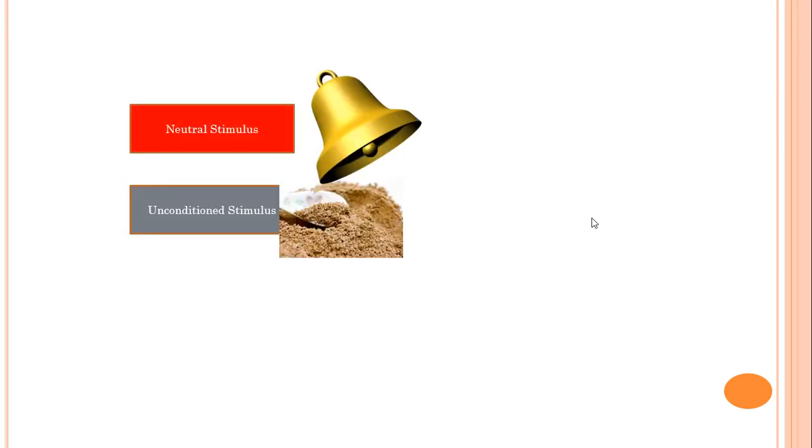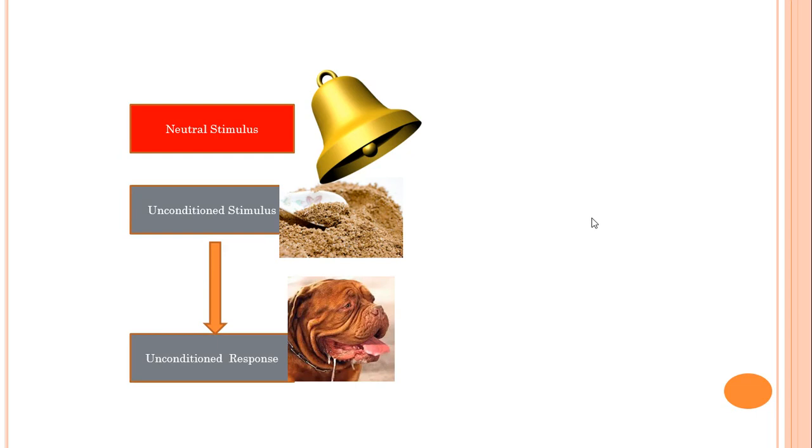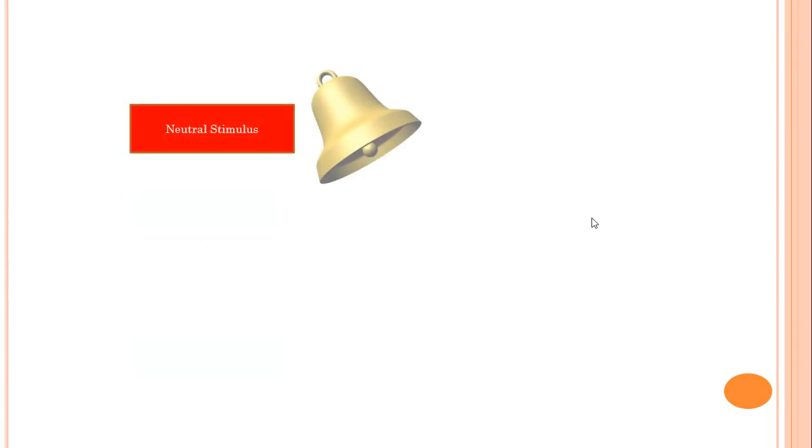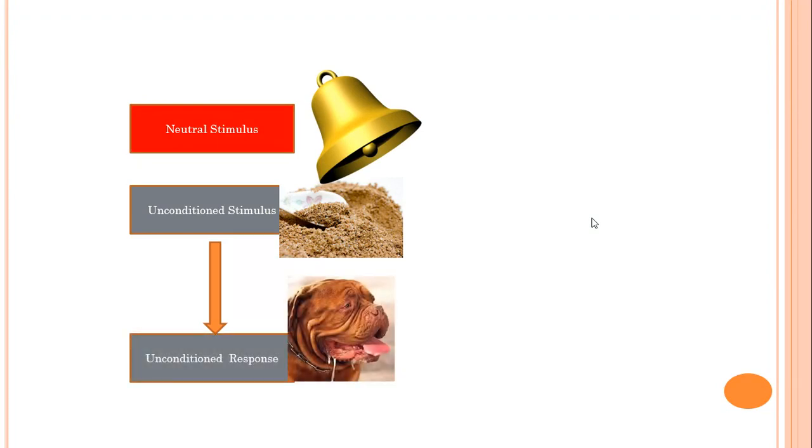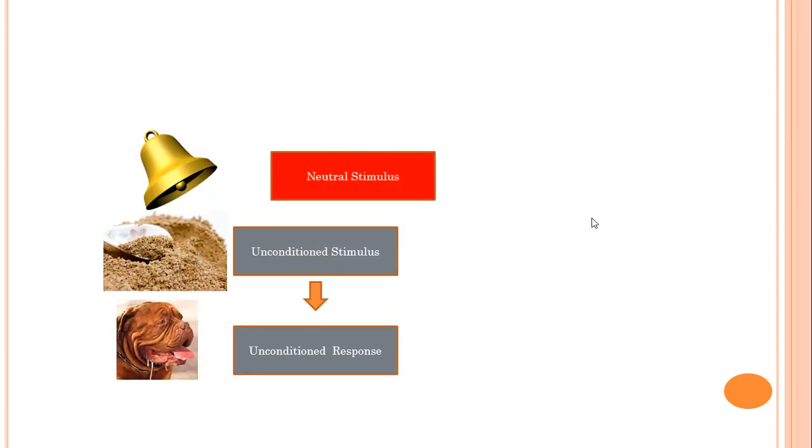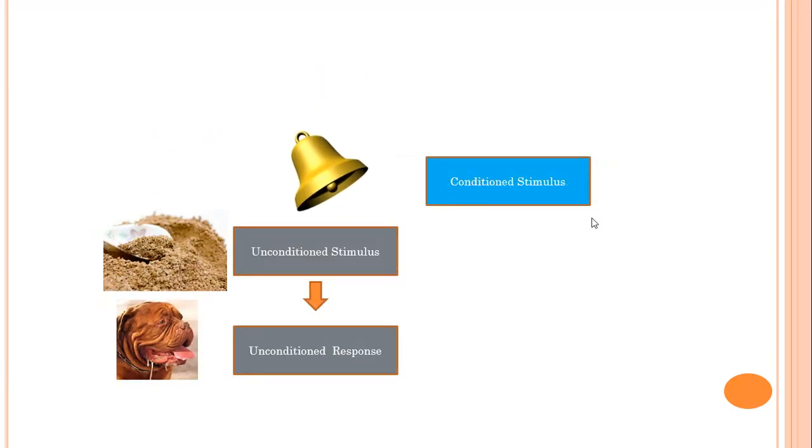So again, Pavlov rings the bell, gives the dogs the food powder, and then the dogs salivate. And again, ring the bell, give the dogs food powder, and the dogs salivate. And if you do that enough times, eventually, that bell is going to take on new properties.